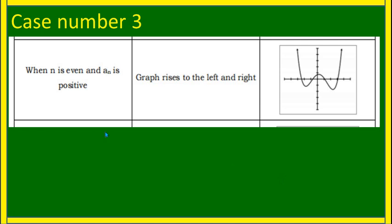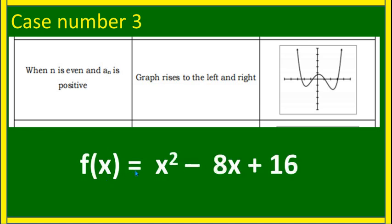Case number three: when n is even and a sub n is positive. Example: f(x) = x² − 8x + 16. The degree is 2, which is even, and the leading coefficient is 1, which is positive. So the graph rises to the left and right.